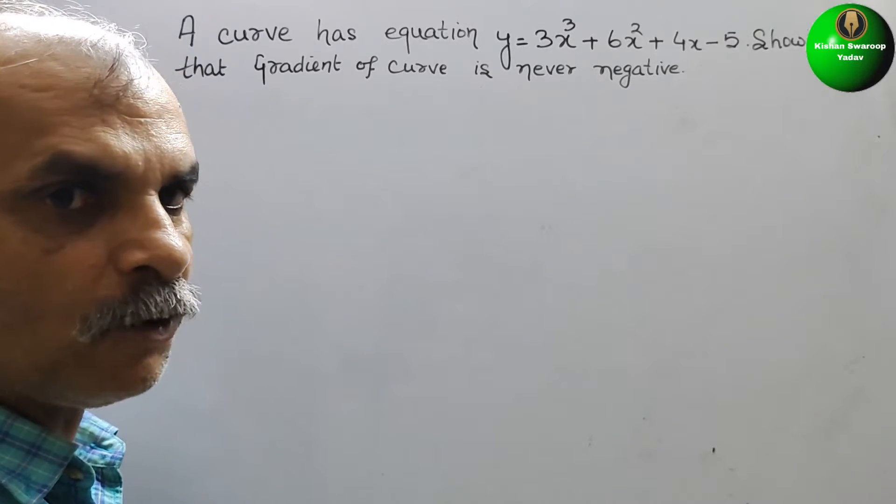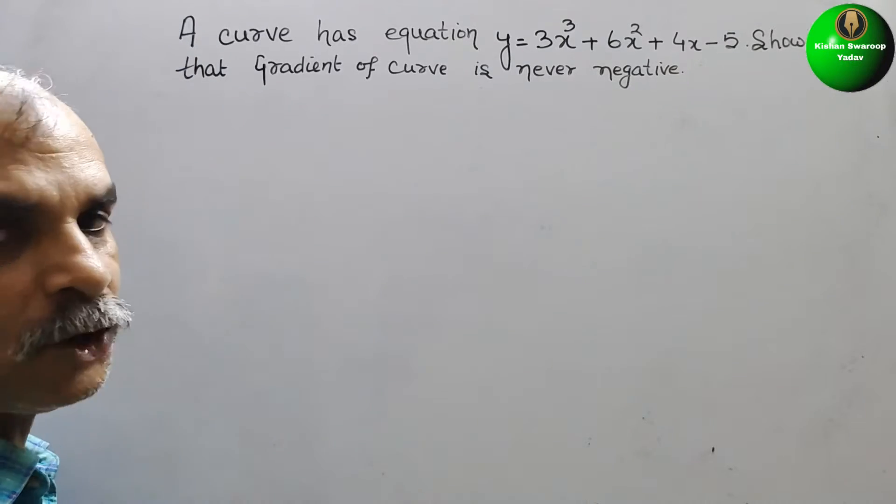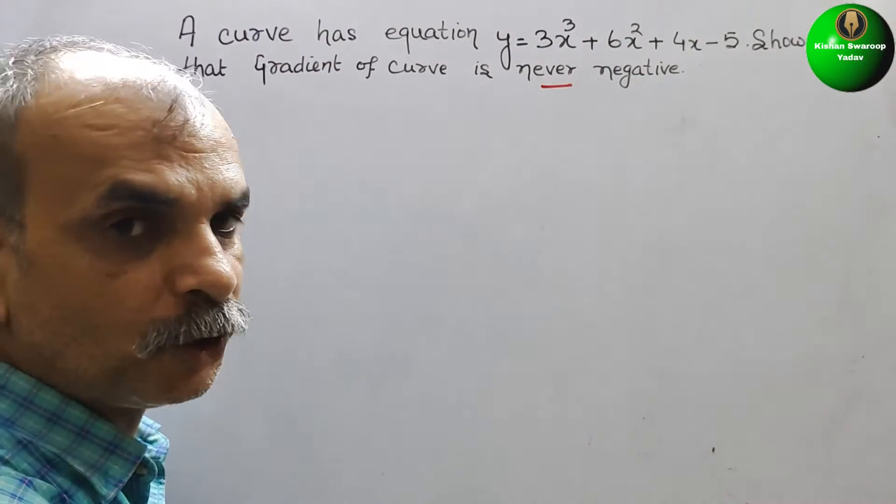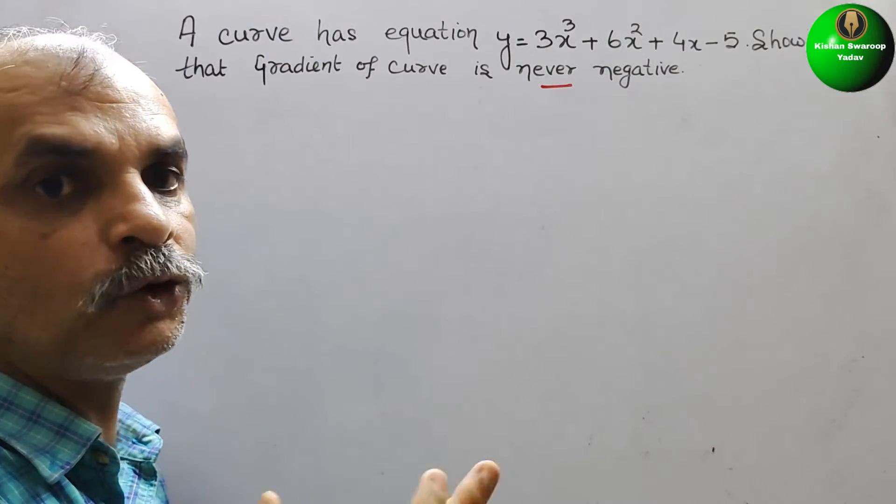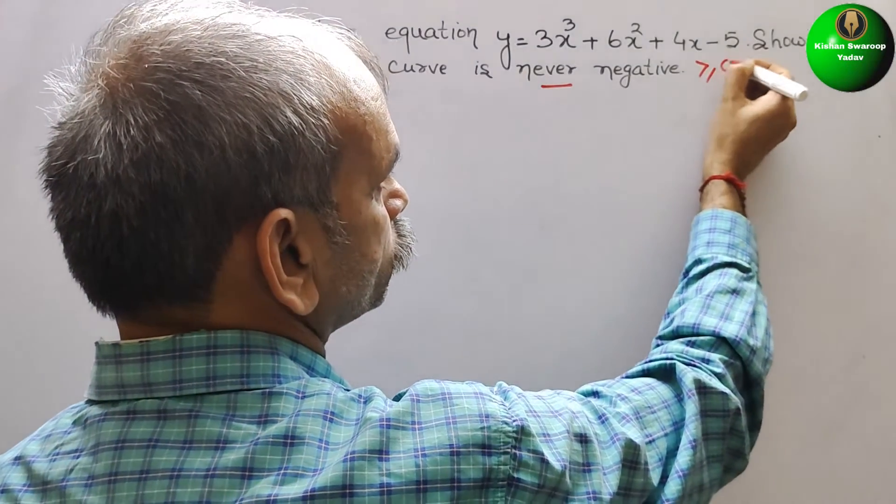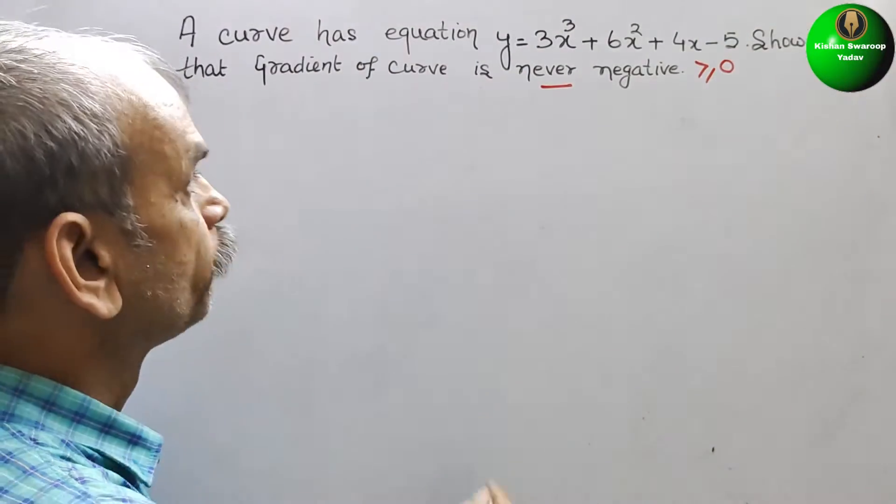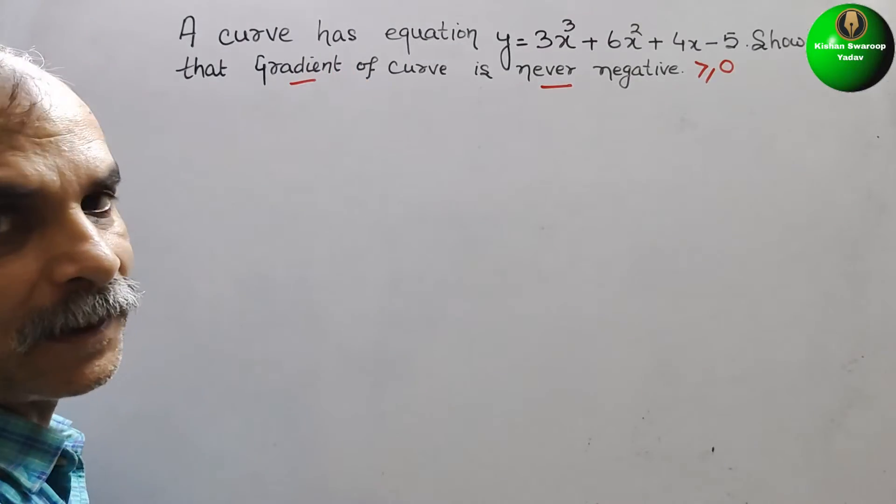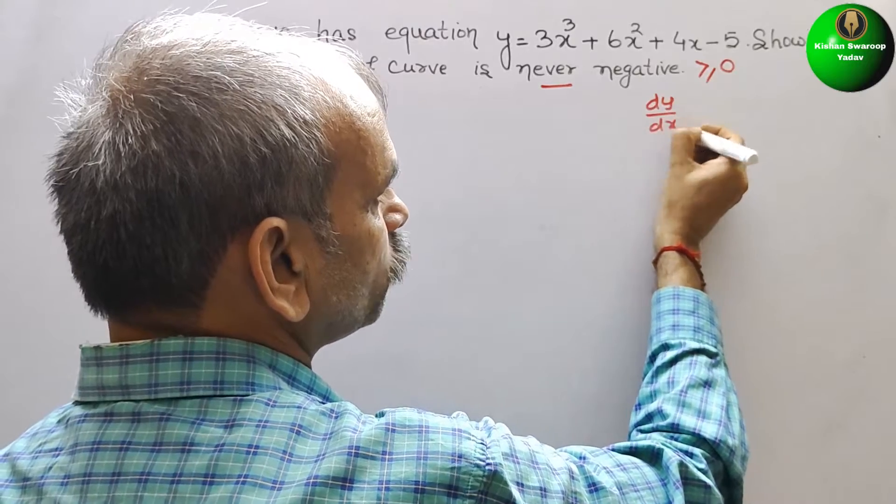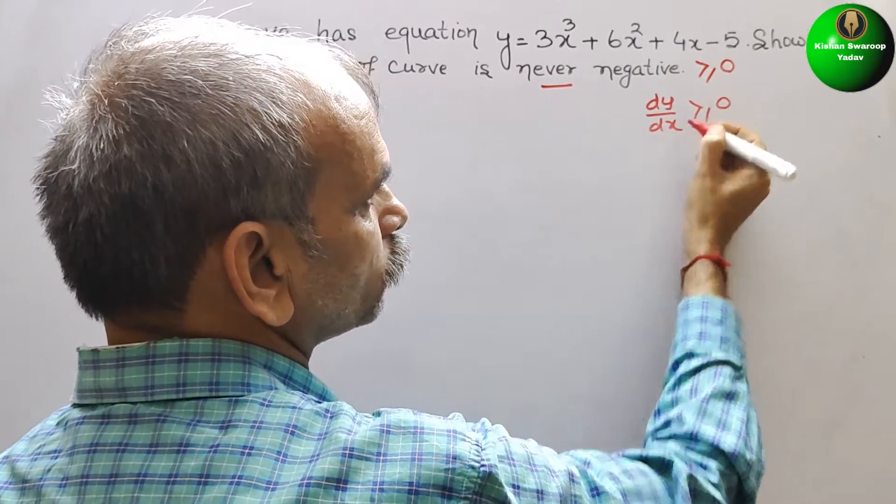So now, never negative means it should be greater than or equal to 0. The gradient, that means dy/dx, should be greater than or equal to 0.